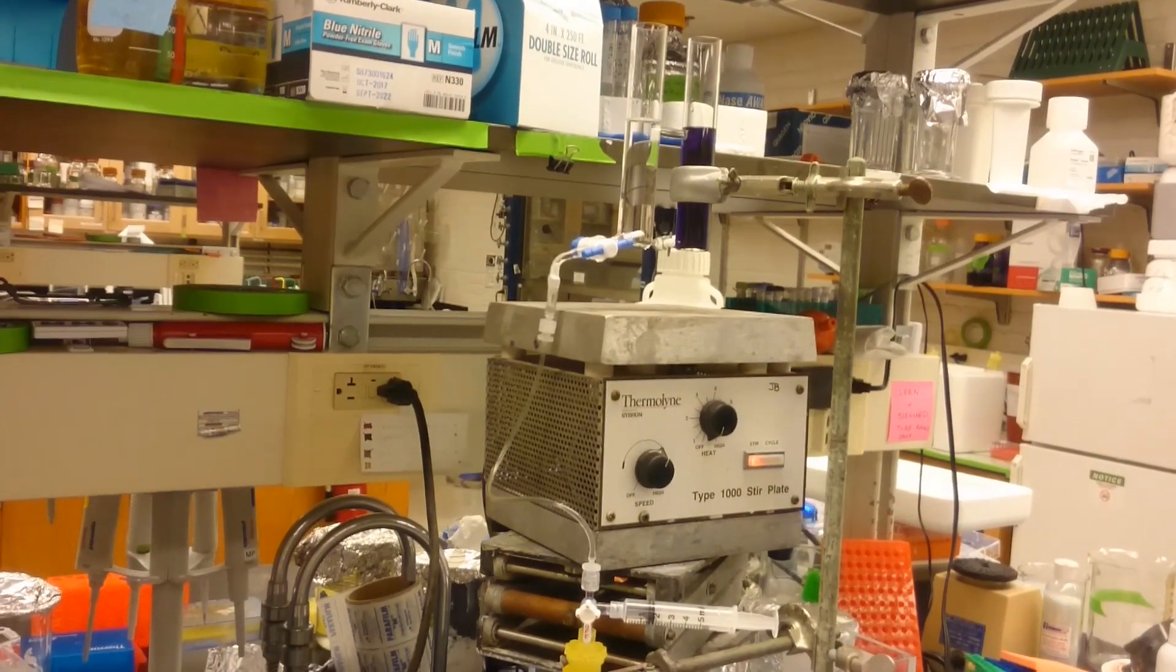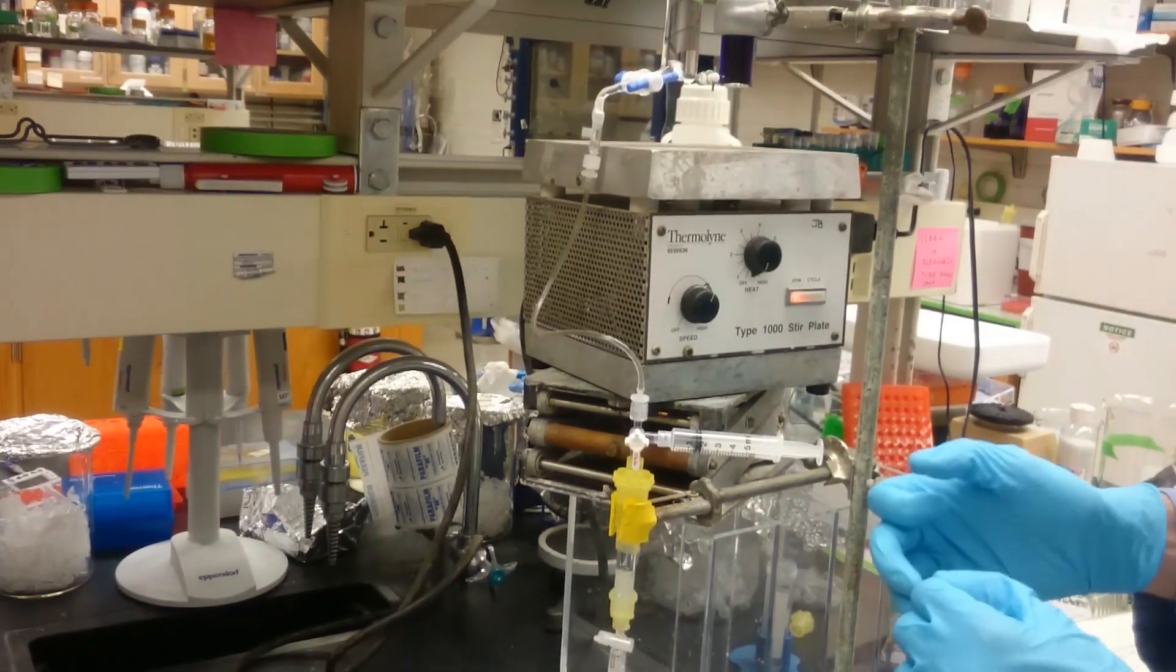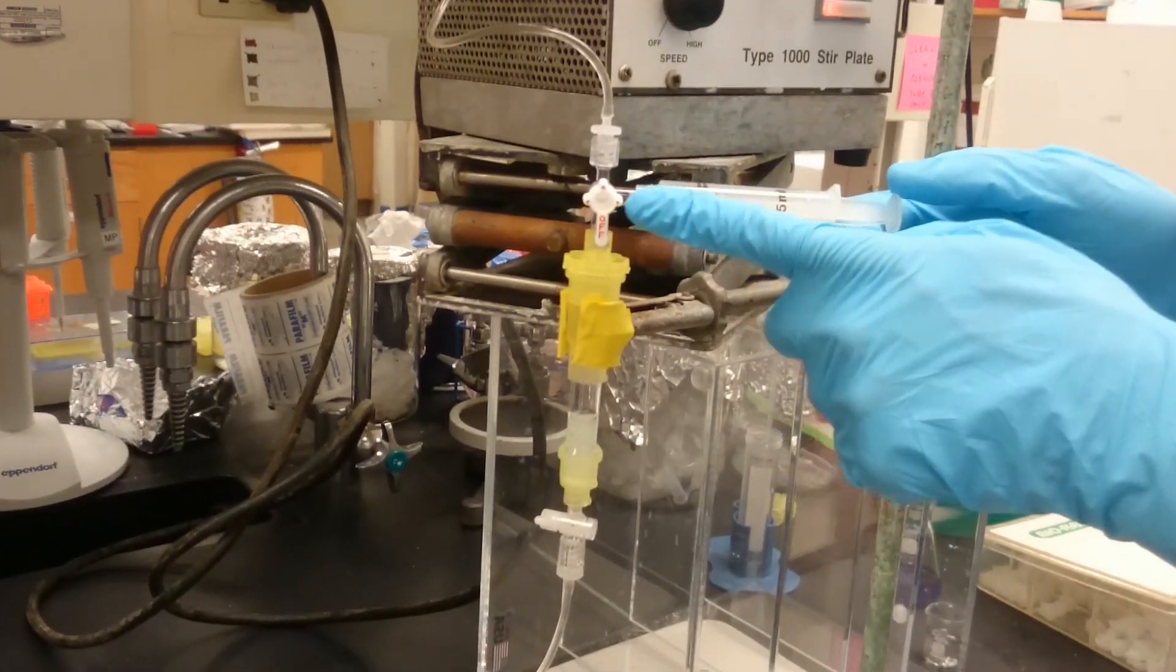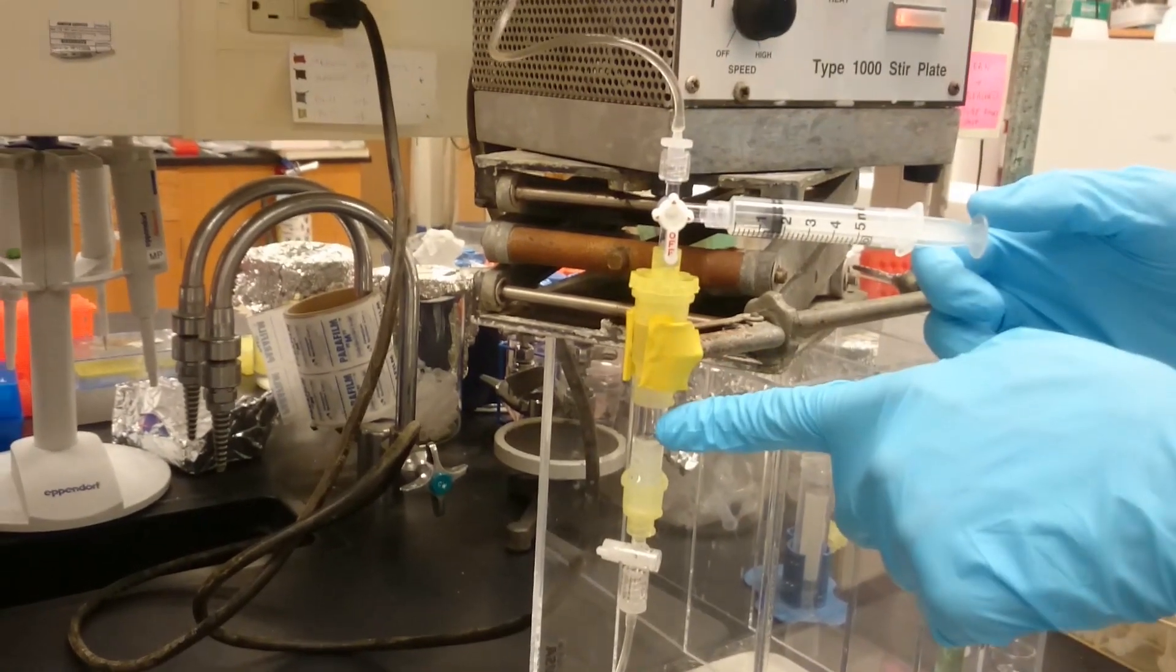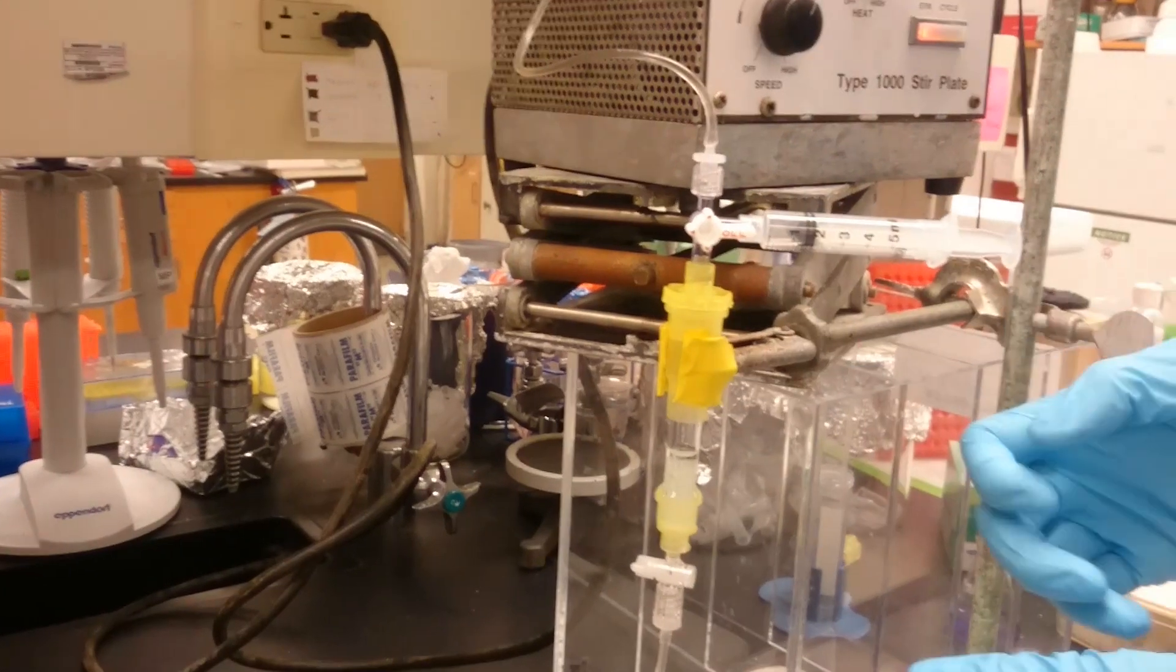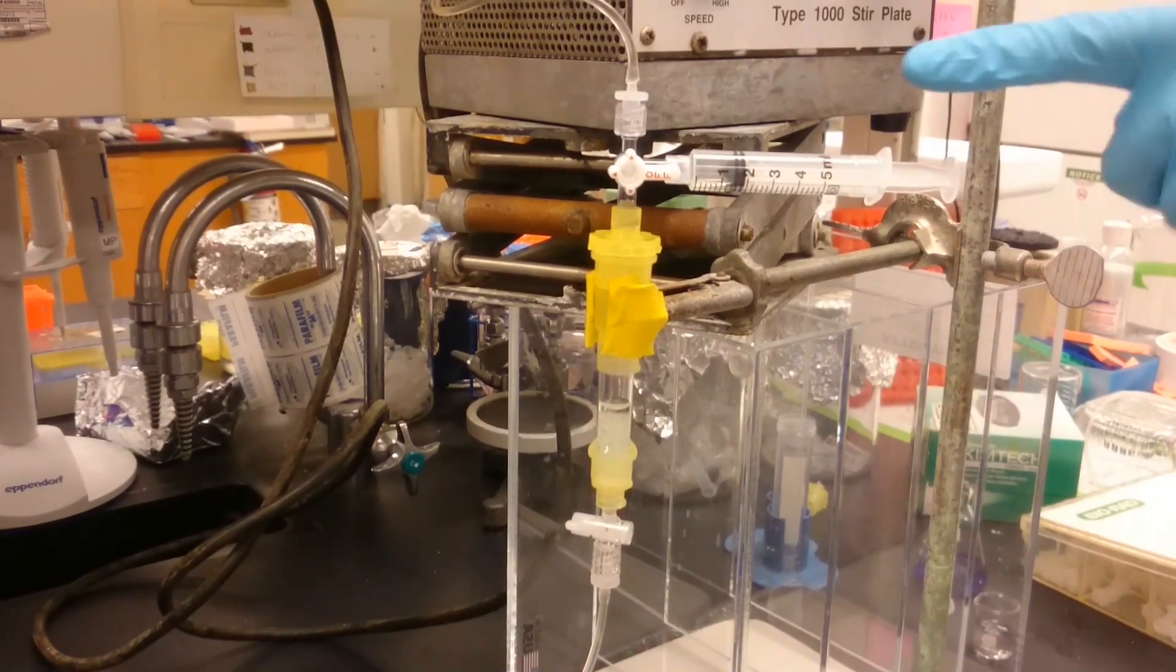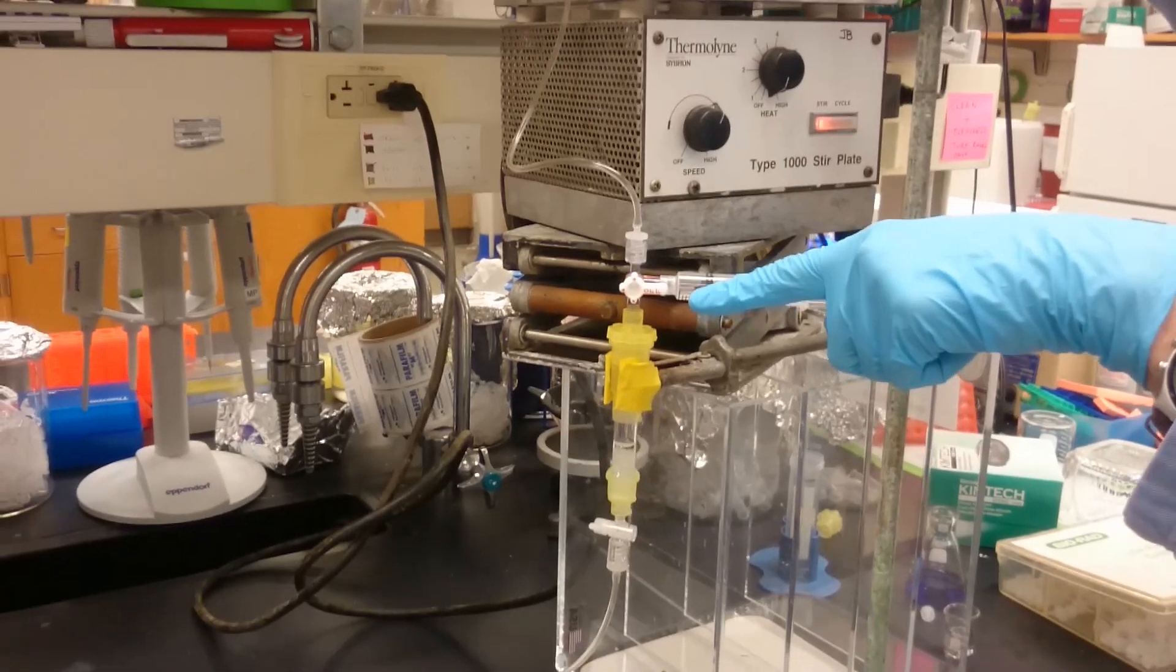So then we can close off the three-way valve to the syringe, and that'll make it open from the buffer to the column like this. And then you can see that it's starting to fill here up to the depth that is determined by the vertical separation between the column and the buffer reservoir.